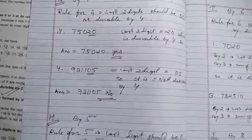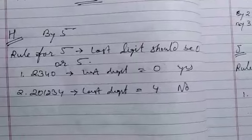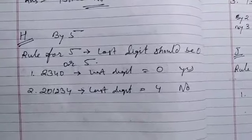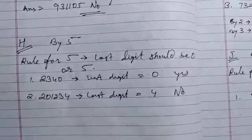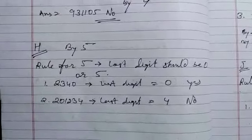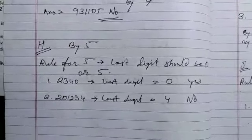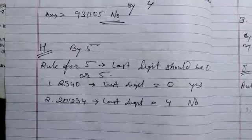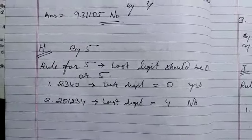Part H: divisible by five. The rule is that the last digit should be zero or five. For example, 2340 — last digit is zero, so yes. For 201234, the last digit is four, so we cannot divide by five, so we write no.